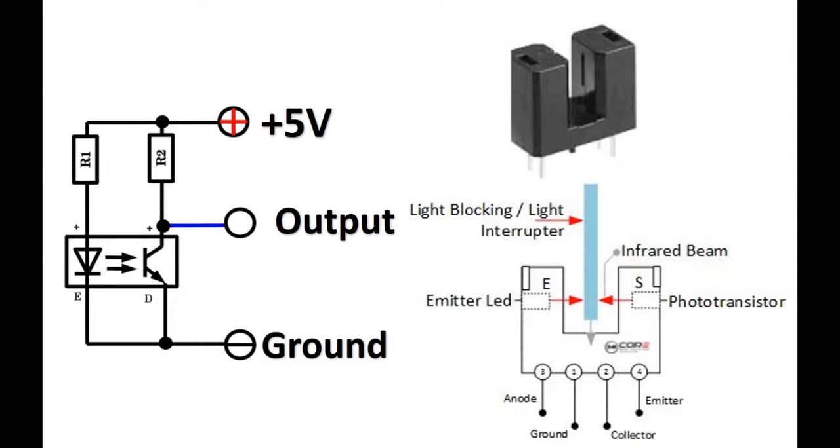On the contrary, when an obstacle comes between the IR transmitter LED and IR receiver, the transistor turns off. Also, the output signal makes a transition from active low to an active high level. Hence, a pulse or rising edge appears on the output pin.